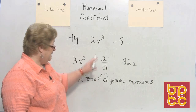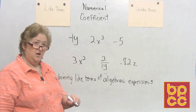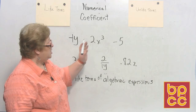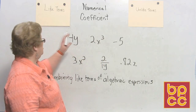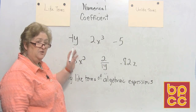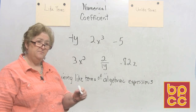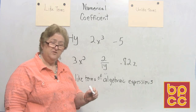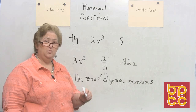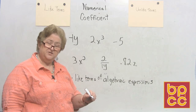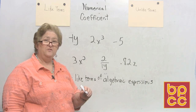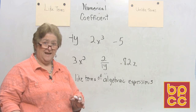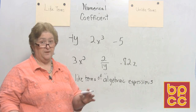Now I'm going to give you some samples of terms and we're going to determine if they go under unlike terms or like terms. The rule is: it doesn't matter what the front-end number is — the coefficient. What matters is whether the variables are the same and the exponents are the same. Let me show you some samples of like terms and unlike terms before we play our little game.